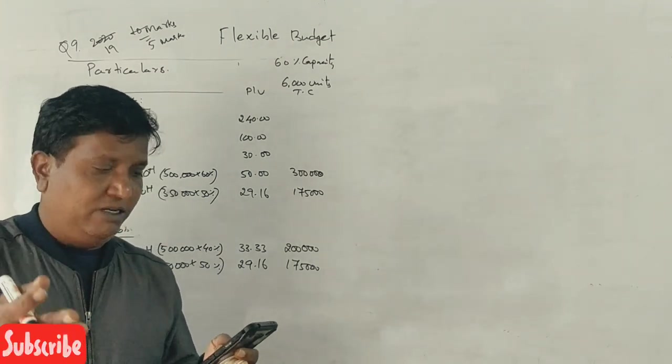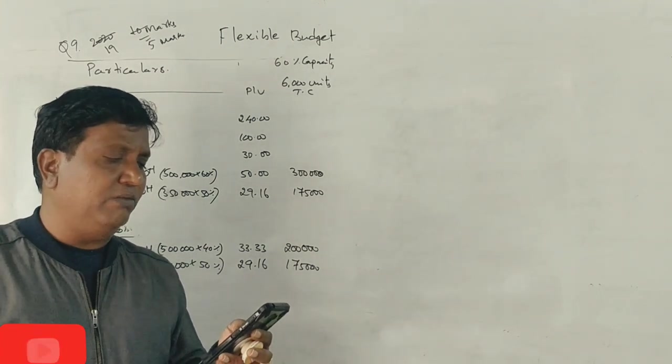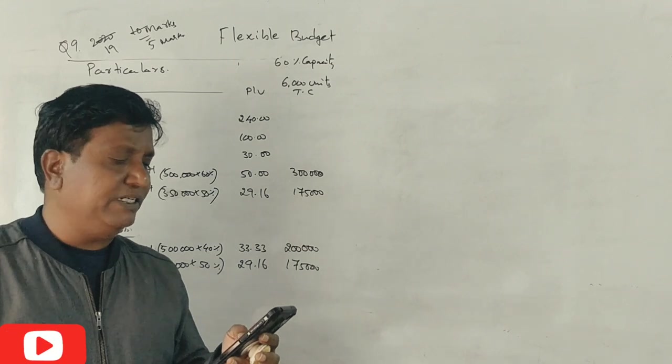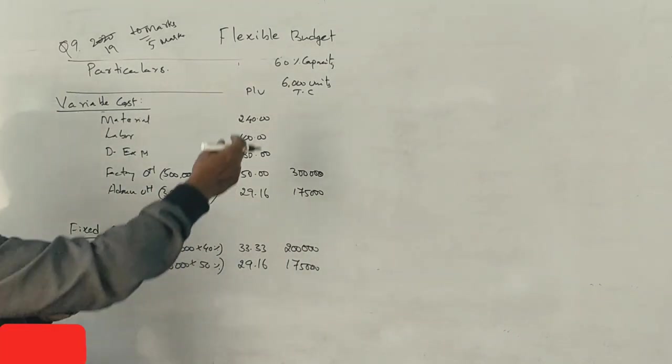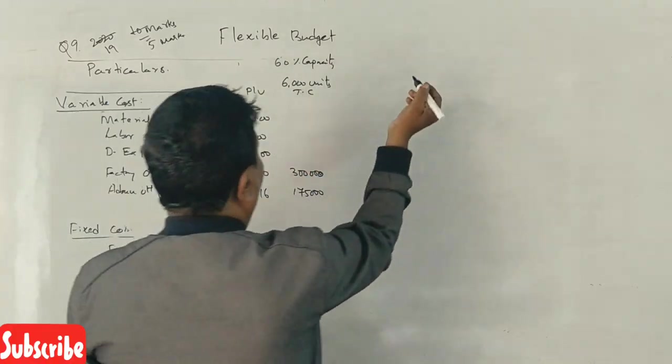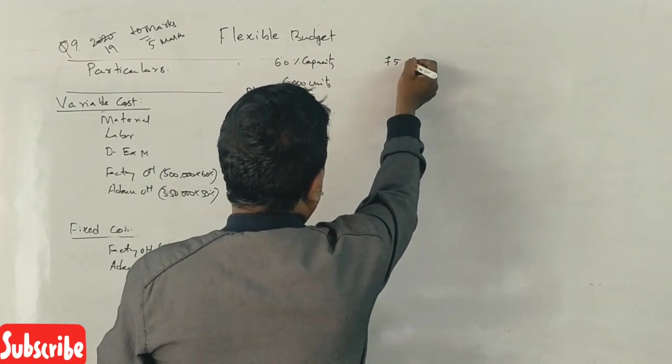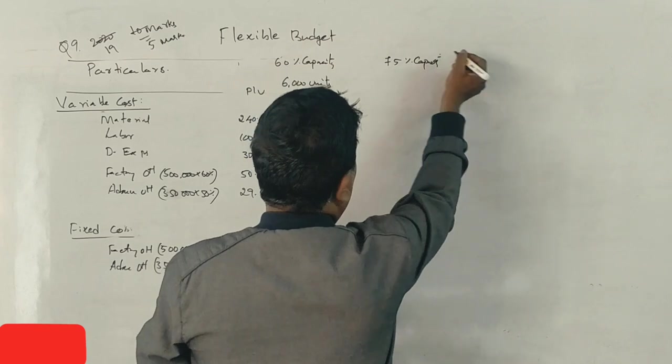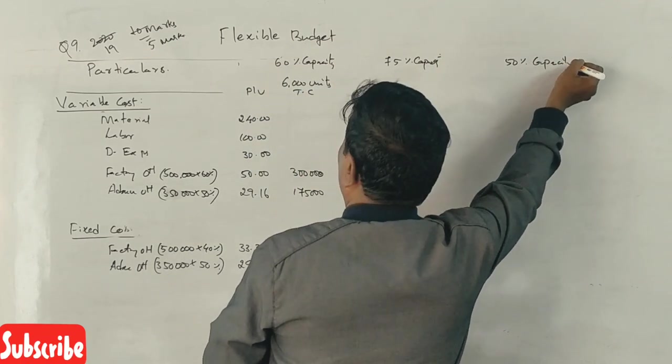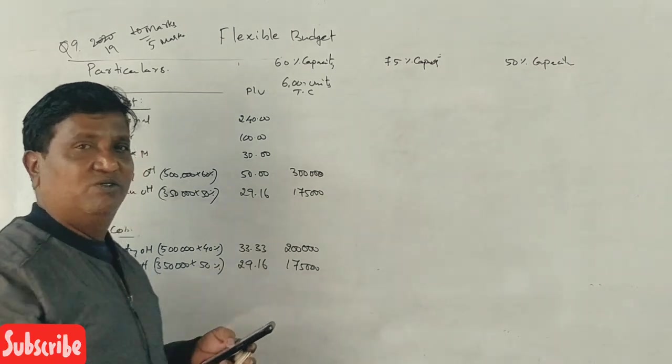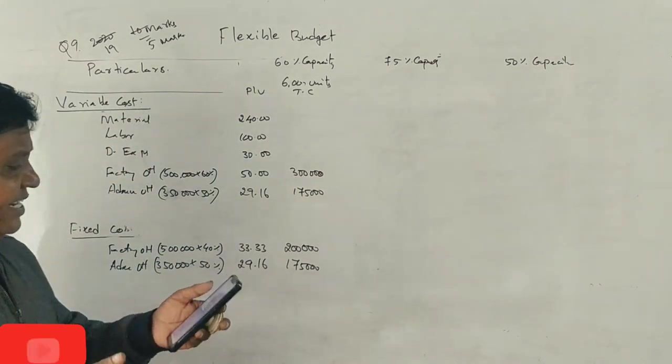Prepare flexible budget showing marginal cost and total cost at 60% capacity, 75% capacity, and 50% capacity. Lowest to highest to lowest. This is the adjustment.